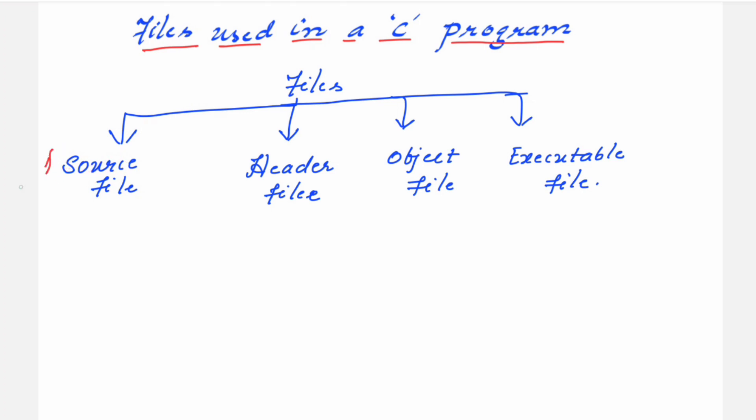The first one we call it as the source file, then you have the header file, object file, and the executable file.